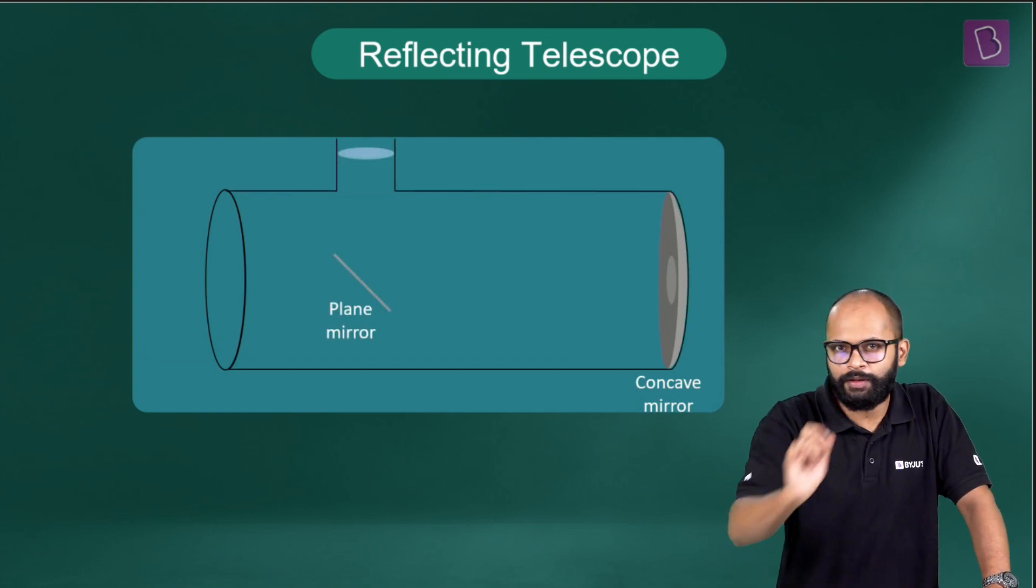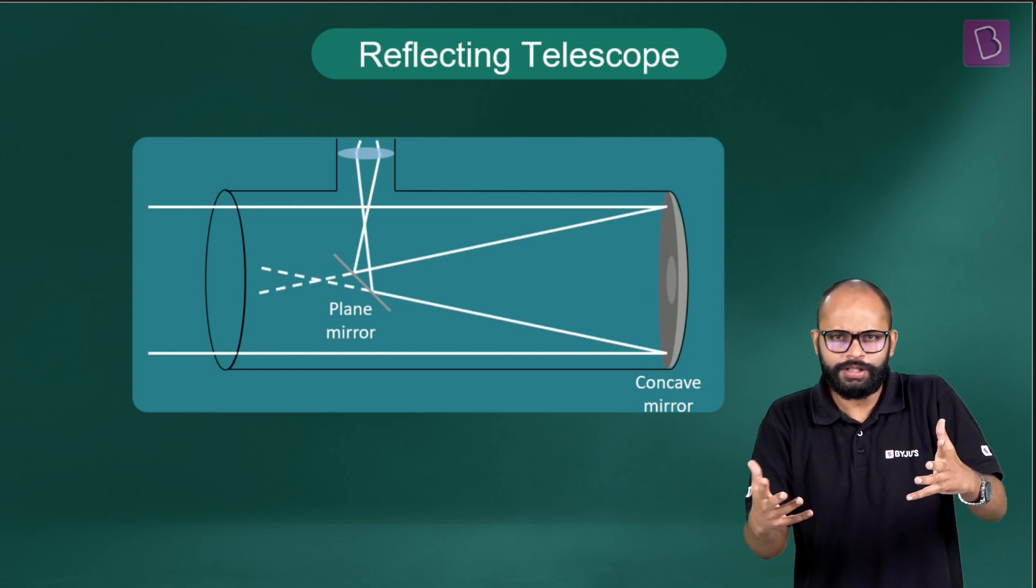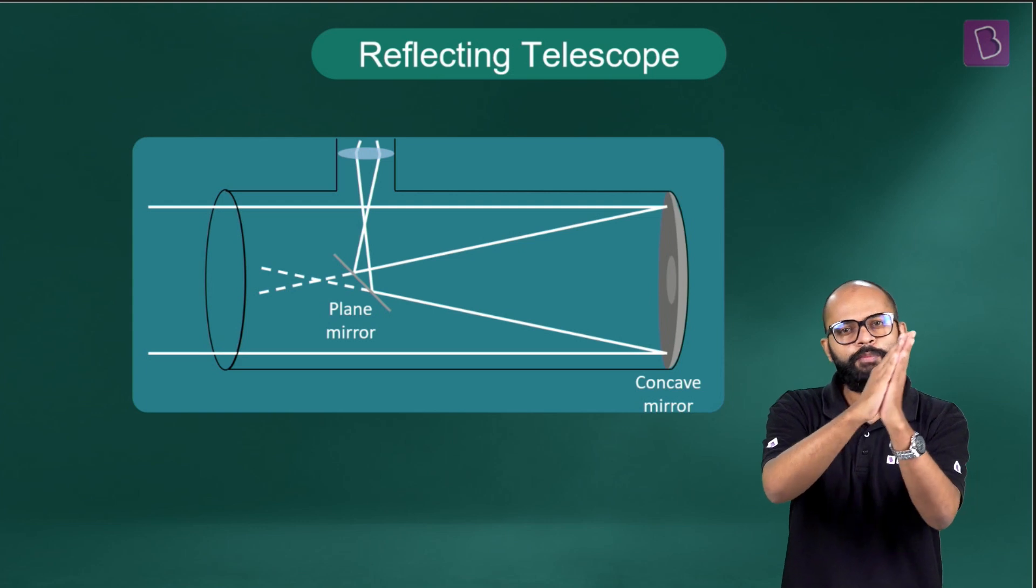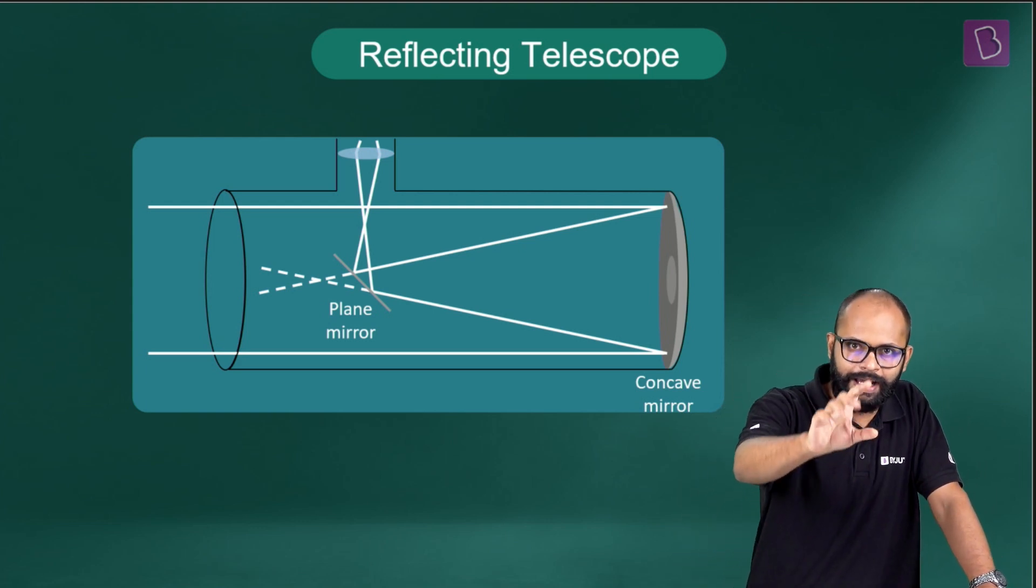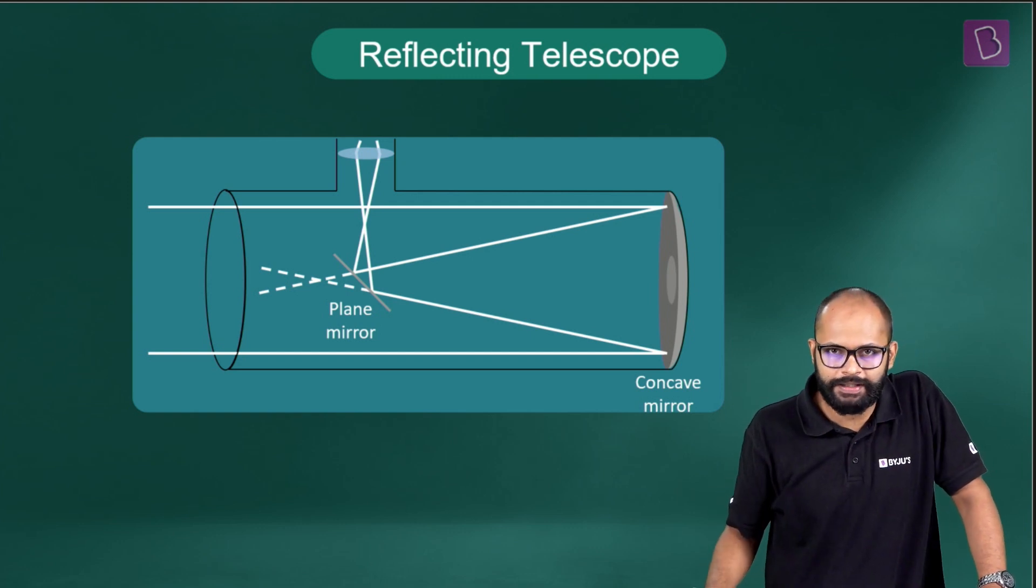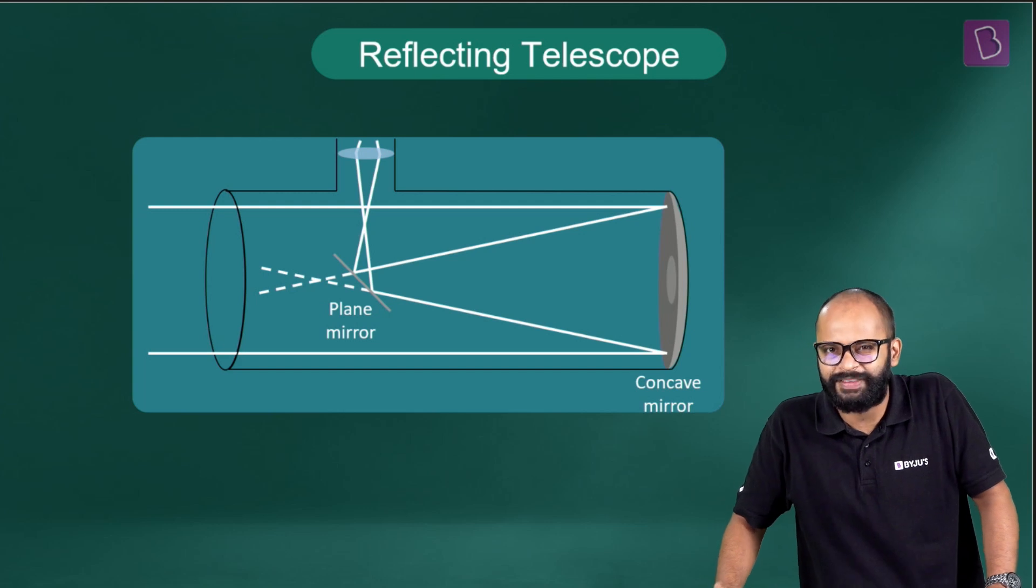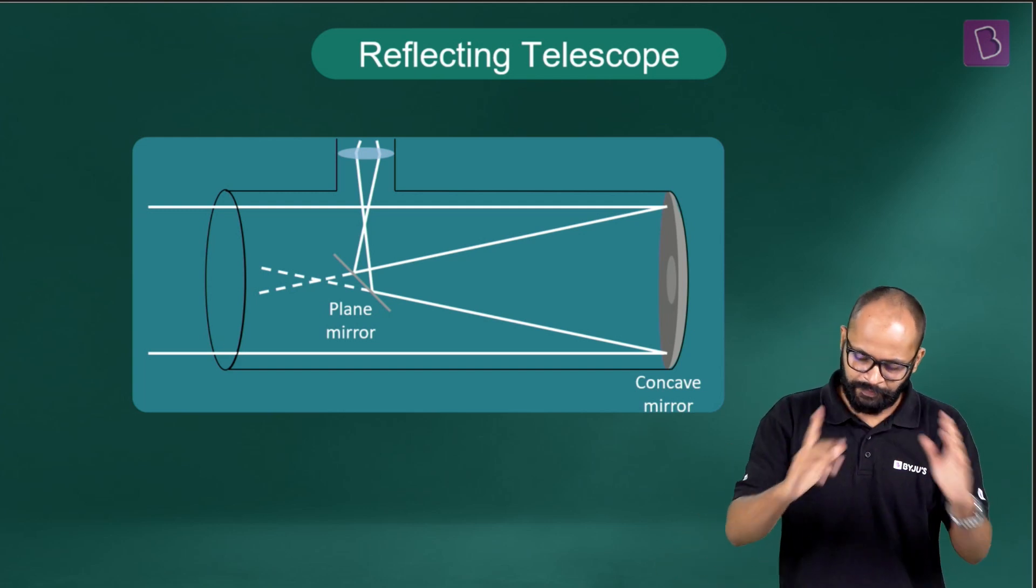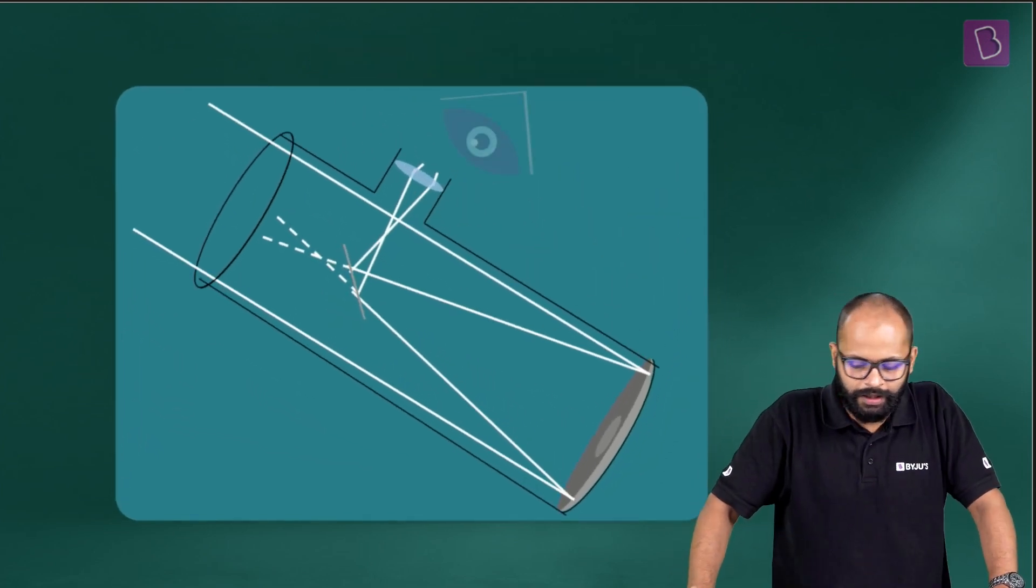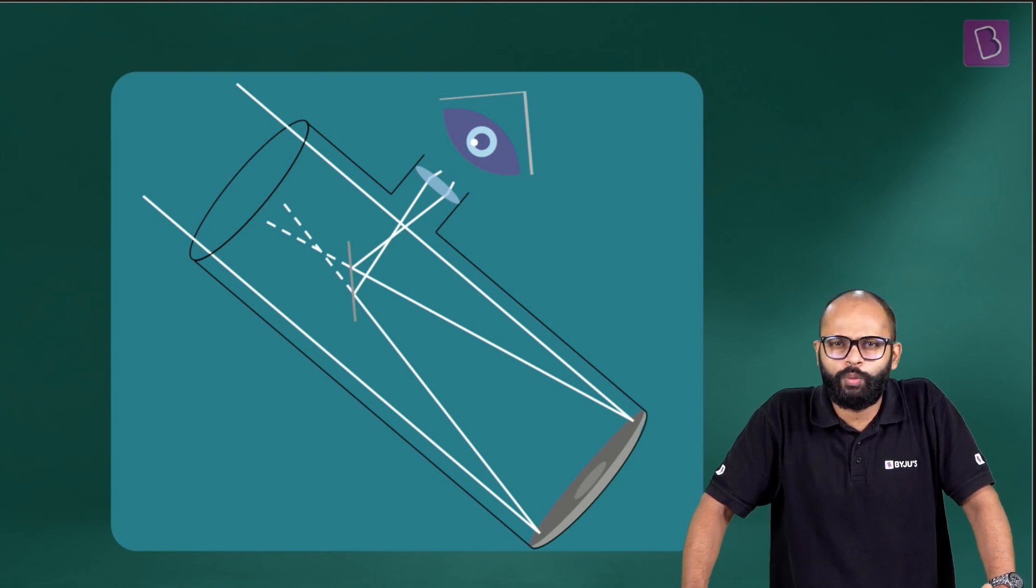He came up with an ingenious idea. What if we keep a plane mirror in between? Light falls on the concave mirror, converges or tries to converge at a point. In between there's a plane mirror, and then this plane mirror reflects the light and sends it to an eyepiece. This is where you can see an enlarged image of this object, a clear and large image.